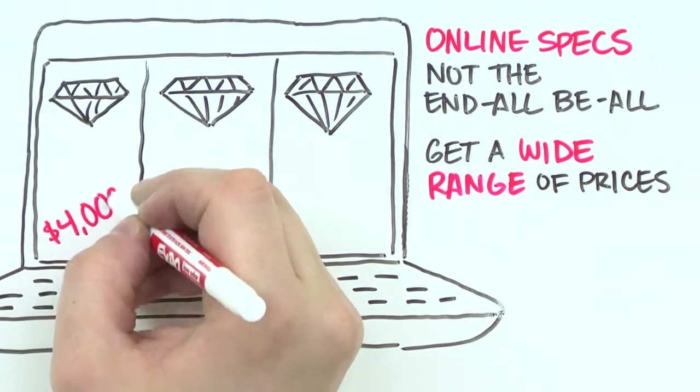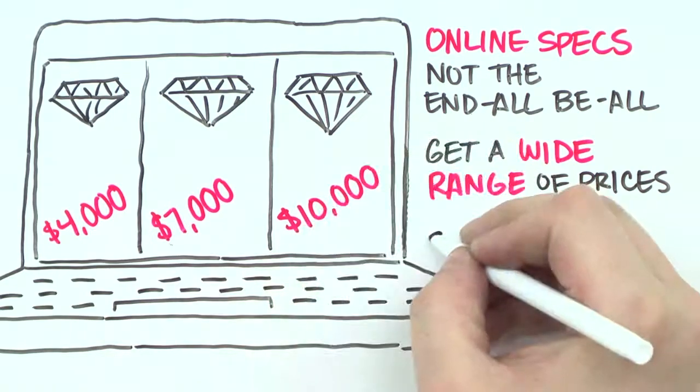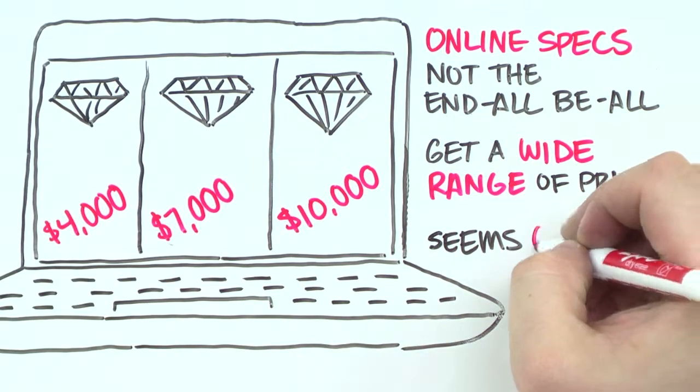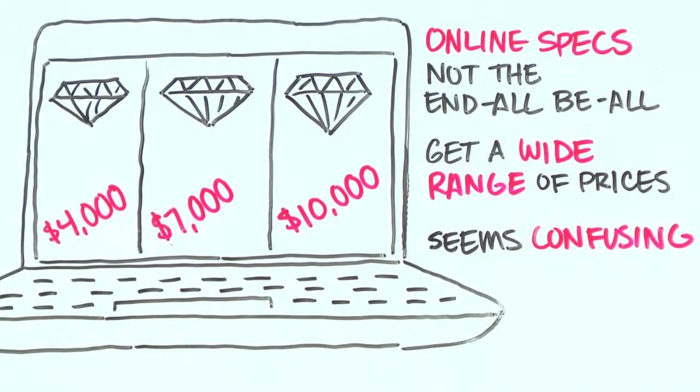For the one-carat diamond I was interested in, the price ranged from $4,000 to $9,000. At first glance, this seems kind of confusing, and you're probably asking yourself, can't I just go with the cheapest one that meets my 4C specs?